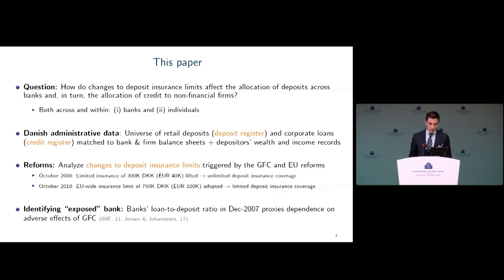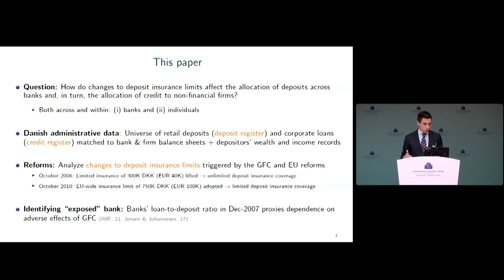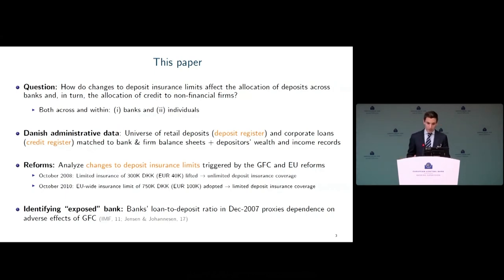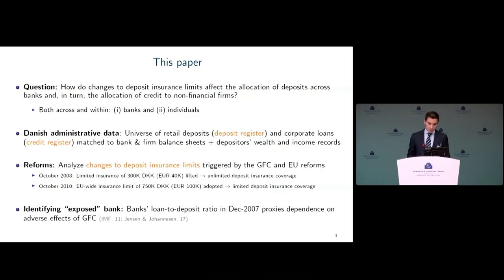The second reason Denmark is a great laboratory is that it underwent two major changes to deposit insurance limits. First, in October 2008, in response to the collapse of Lehman Brothers, the Danish government lifted the previous limit of 300,000 Danish krona (roughly 40,000 euros), resulting in unlimited deposit insurance. Two years later, the EU harmonized deposit insurance across member states and Denmark adopted a new limit of 750,000 Danish krona (roughly 100,000 euros), going from unlimited back to limited insurance. We study both reforms.